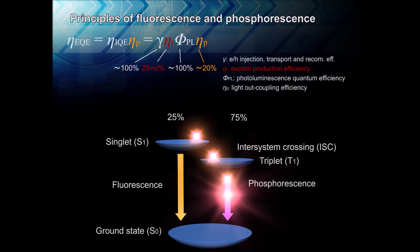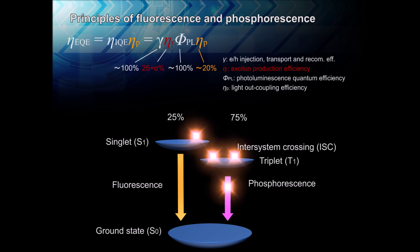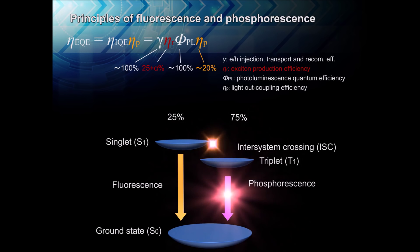However, the heavy metal, which is often a rare earth element such as iridium or platinum, restricts the freedom of chemical design and increases cost. Thermally-activated delayed fluorescence makes high-efficiency possible without the use of a heavy metal.